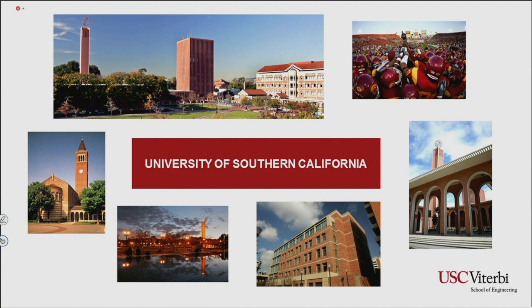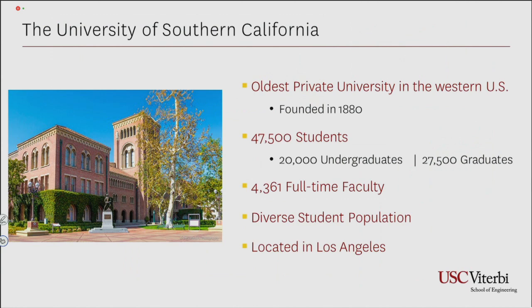If you're not familiar with the University of Southern California, we are the oldest private university in the western United States, founded in 1880. We have about 47,000 students — about 20,000 undergraduates and just over 27,000 graduate students — with students coming from all 50 states and over 100 countries. The campus is located in Los Angeles, just south of downtown LA, which makes it an ideal location for connecting with a lot of the industry in the greater LA area.